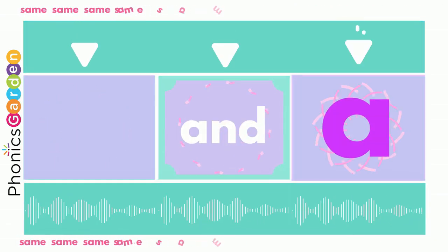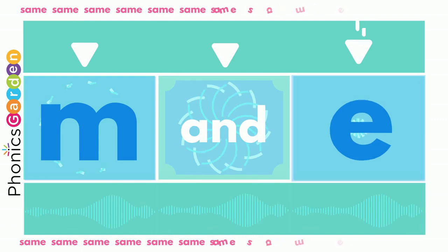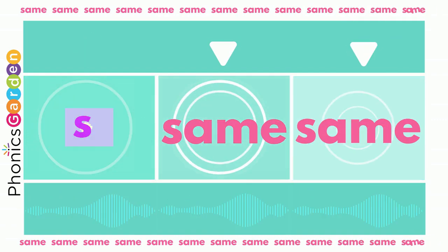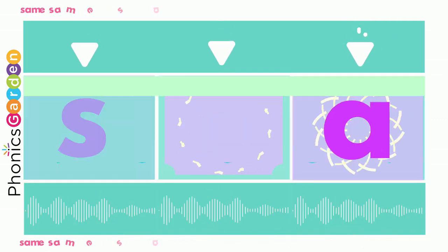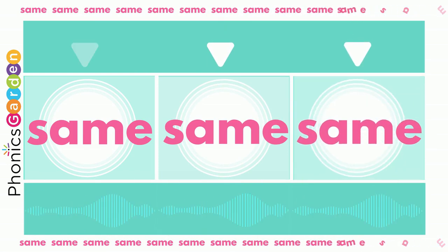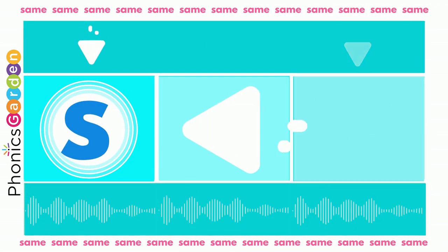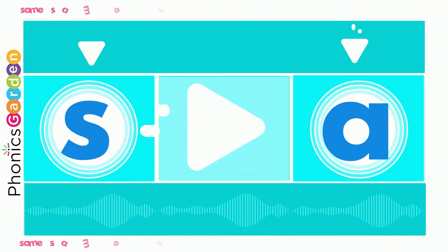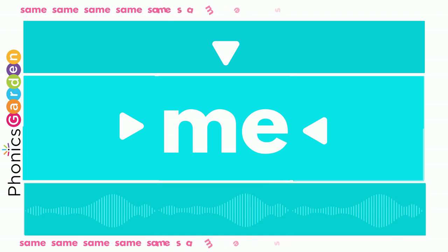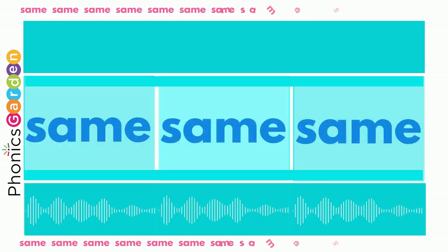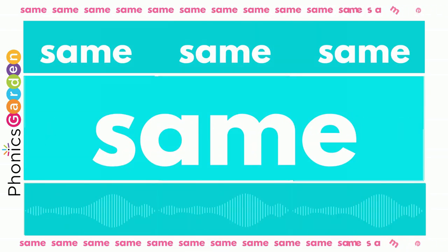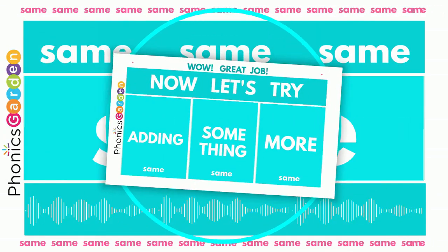S-A-M-E, same, same, same. Use the S, use the A, end it with M-E. Now you've made the new word, same for me.